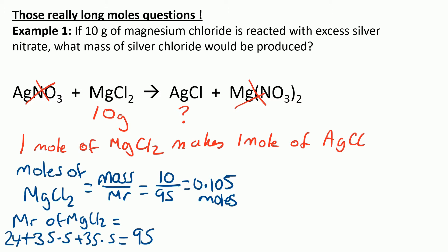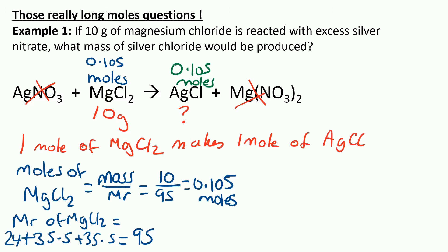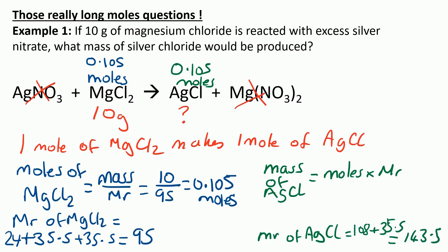We annotate the equation and write 0.105 moles above MgCl2. Now that tells us we'll also make 0.105 moles of AgCl, as the ratio is 1 to 1. But we want the mass of AgCl, so we need to use the other form of the equation: mass of AgCl is moles times MR. The MR of AgCl is 108 for silver plus 35.5 for chlorine, which comes to 143.5. So moles times MR works out at 15.07 grams. And that's the answer.